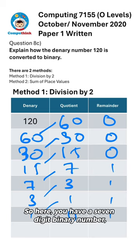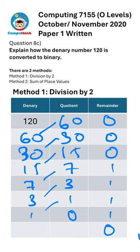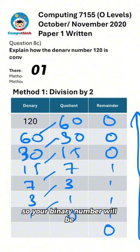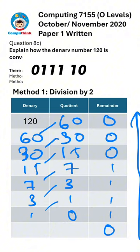So there you have a seven digit binary number. To complete it, we'll just add a zero here. And what you do is you read from the bottom up. So your binary number will be zero, one, one, one, one, one, zero, zero, zero. Now you've got it.